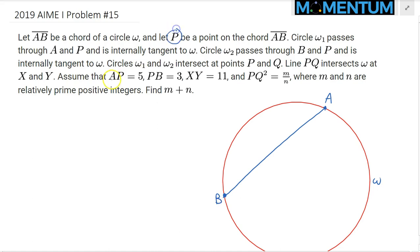We will be picking a point P closer to B than to A — somewhere here. This distance here is 3 and this one is 5. Then we'll draw two circles, omega 1 and omega 2. They will both be internally tangent to omega and also pass through points A, P and B, P respectively.